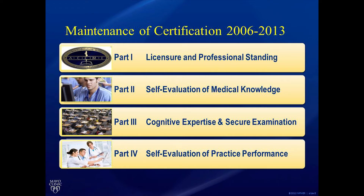These are the four parts of the maintenance of certification program. Part 1 refers to licensure and professional standing — maintaining your medical license in each state you practice in, as well as accruing sufficient CME credit. Part 3 is the secure examination required every 10 years. Parts 2 and 4 were new in 2006: Part 2 is self-evaluation of medical knowledge through multiple choice modules, and Part 4 is self-evaluation of practice performance, otherwise known as a quality improvement project.